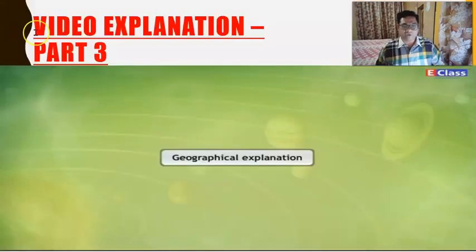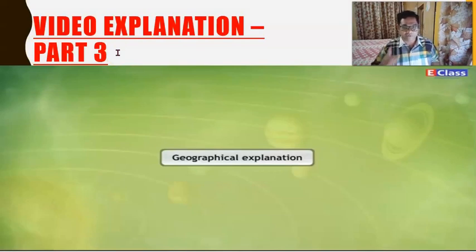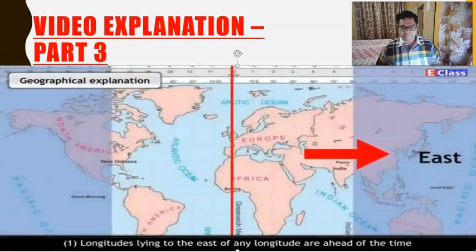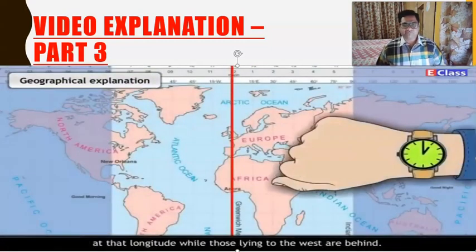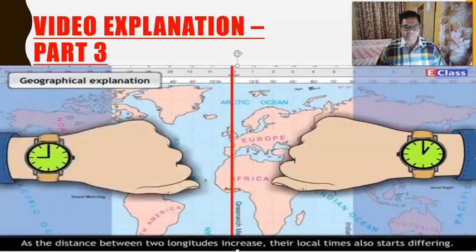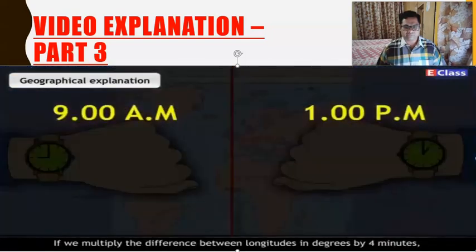Kindly watch the explanation of Part 3. It starts from longitudes in your book and reaches till standard time of India. Watch very closely — keep this in mind for the live game at the end. Longitudes lying to the east of any longitude are ahead of the time at that longitude, while those lying to the west are behind.